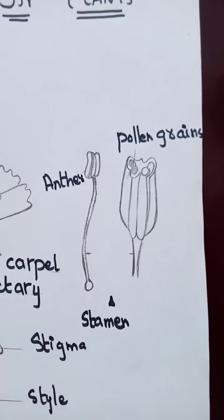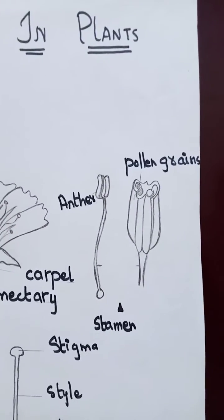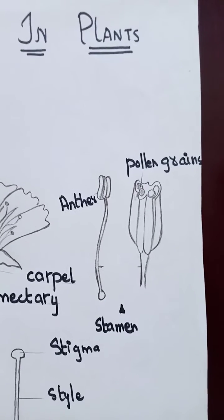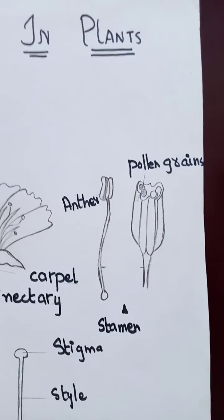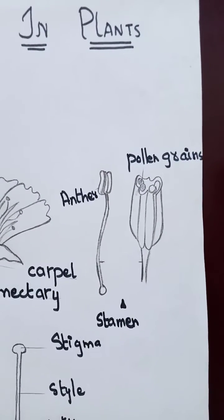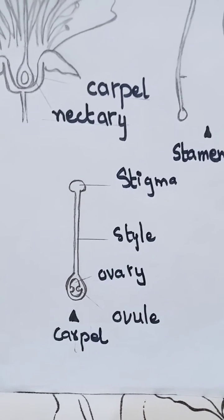Here is the structure of a stamen. There is the anther. The anther produces the pollen grains which contain the male gametes.